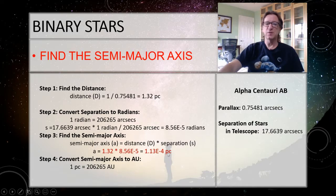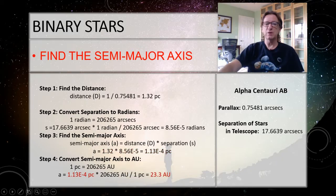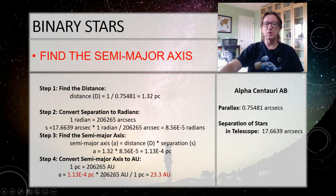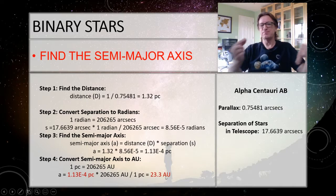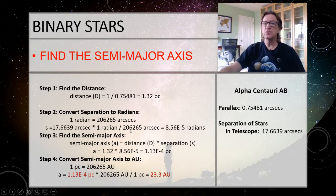The last part of Step 1: convert from parsecs to AU, since that's what Kepler's third law requires. Set up the fraction so parsecs cancel: 1.13 × 10⁻⁴ parsecs × (206,265 AU / 1 parsec) = 23.3 AU. That's the semi-major axis between the two stars — way out in the outer solar system, roughly out toward Neptune. Pause the video and double-check your answers before moving on.